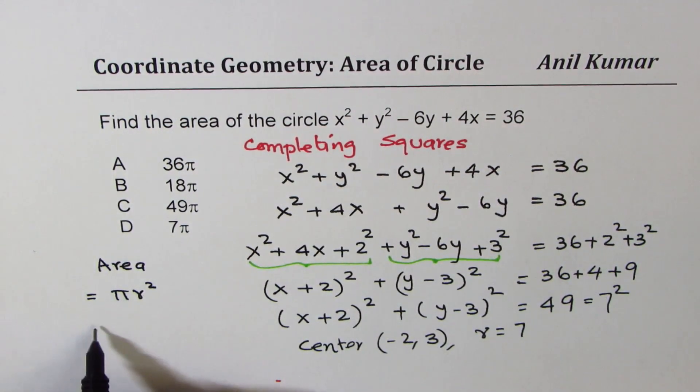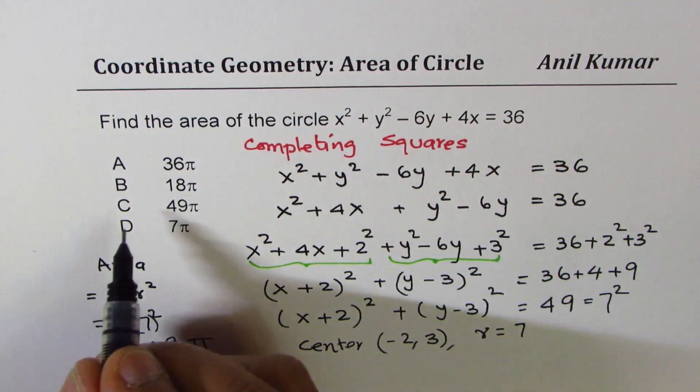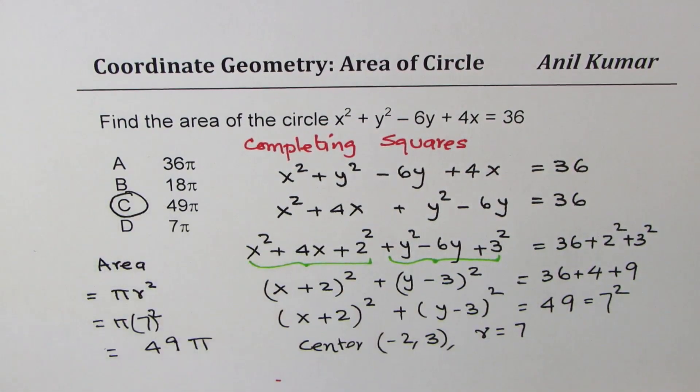Now, the area should be equal to π times 7², which is indeed 49π. And therefore, option C is the right option.